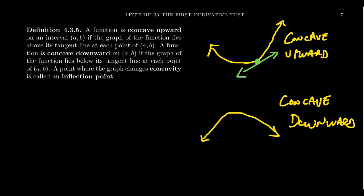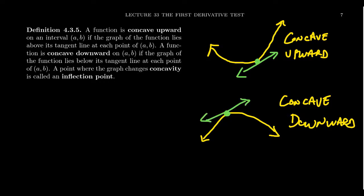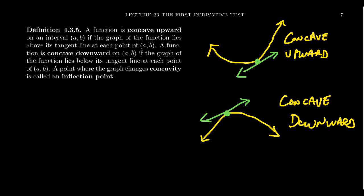Think of it like a bucket of water — the water would be coming down because it's not holding the water whatsoever. If I were to draw a tangent line of the function, you can see that the graph is concave down when the tangent line is above the function. Let's use Desmos as a tool to experiment with this idea of concavity.